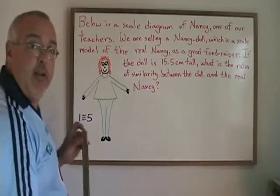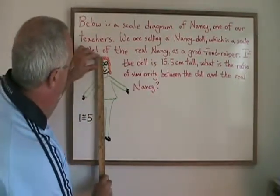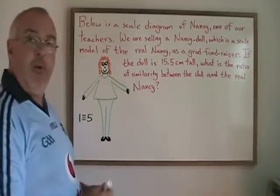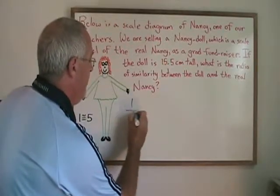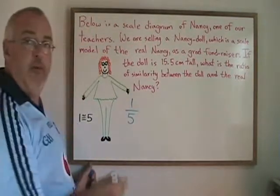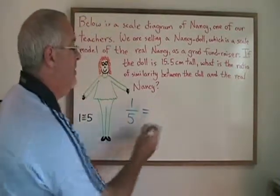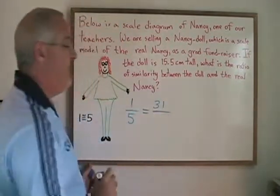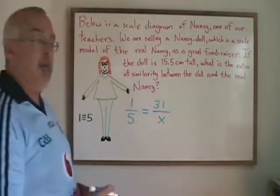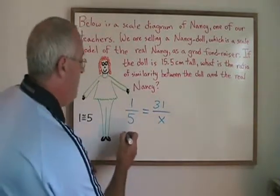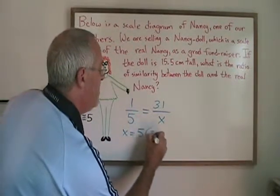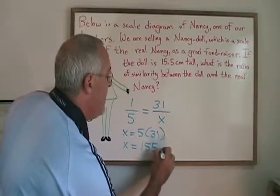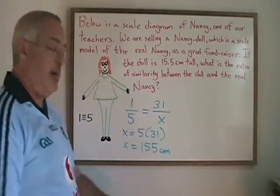I have to measure the height of Nancy in the diagram, and when I do that, I get 31 centimeters. So I can take my 1 to 5 scale and start building a proportion: 1 over 5 real is equal to 31 centimeters from the ruler over x. When I simplify, I get x equals 5 times 31, which means x is equal to 155 centimeters.